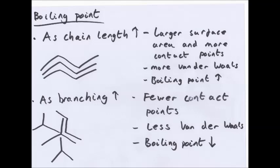As branching increases, you have fewer contact points. As you see by the diagram, if you have the branch structure, it's a lot harder to make it have many contact points with another branch structure, as opposed to the straight-line alkane. So less van der Waals forces form, so boiling point decreases.